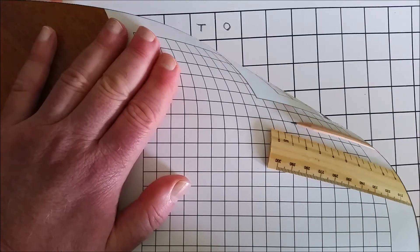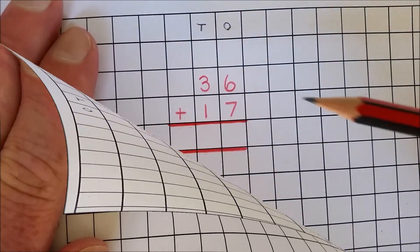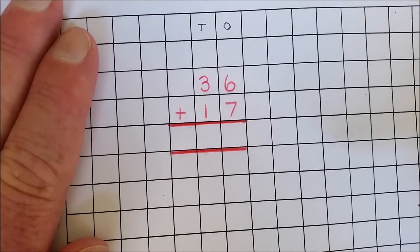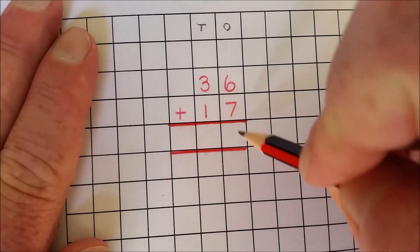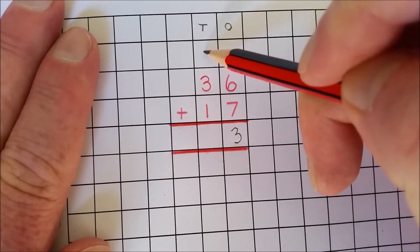The problem 36 add 17 is recorded as follows. Six ones add seven ones is 13 ones. Rename 13 ones as three ones and one ten.